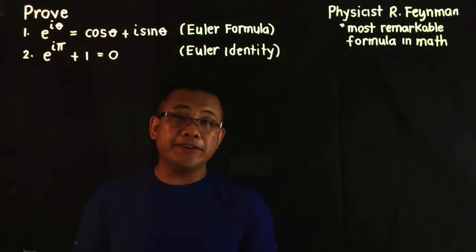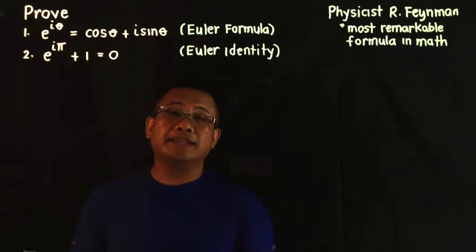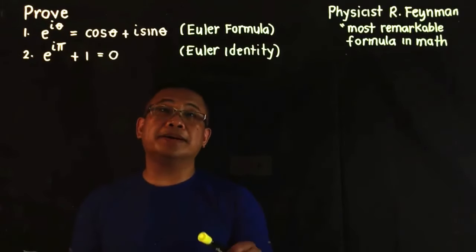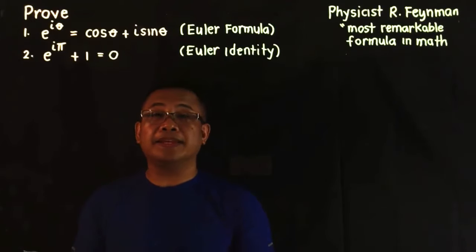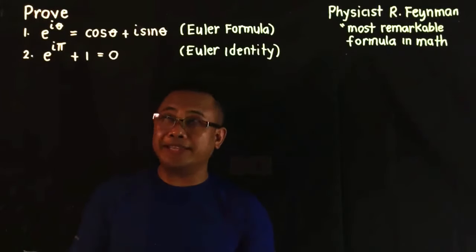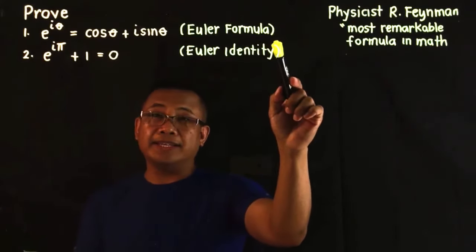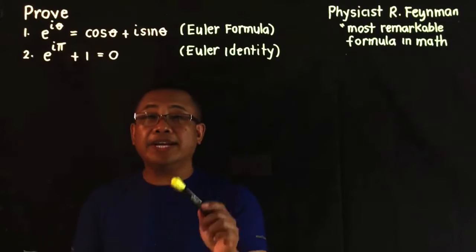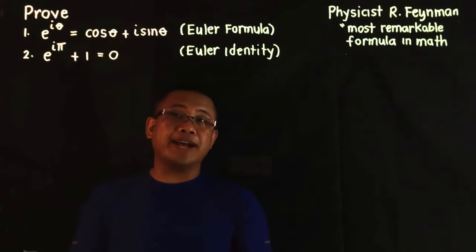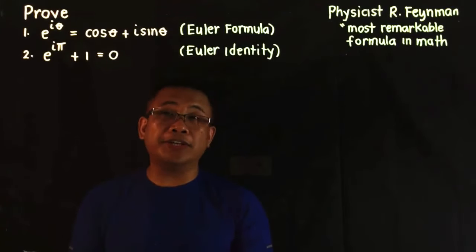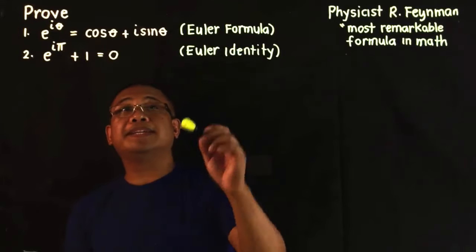Isn't that cool? This video is part of a series on the Euler formula. In previous videos we already talked about the Maclaurin expansion of sine theta, cosine theta, and the natural number e. In this video our task is to prove the Euler formula and derive the Euler identity. Normally this is done using power series, but today I am going to use a first order differential equation to prove the Euler formula.